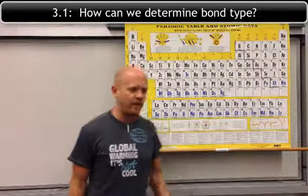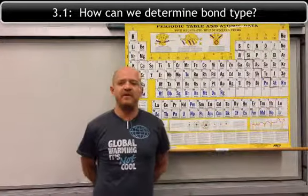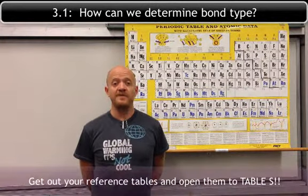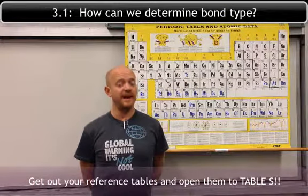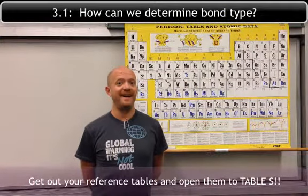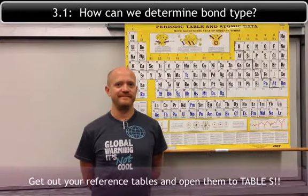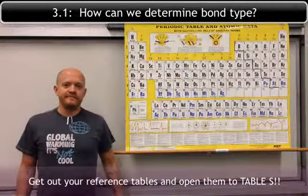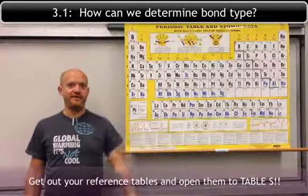In order to figure out what is an ionic bond and what is a covalent bond, we have to look at the electronegativity values of the elements. So right now, get out your reference tables, and I'll wait. You got your reference table? Good.